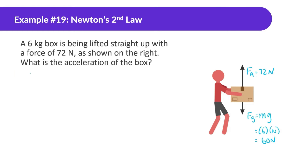We can do the sum of all forces equal to mass times acceleration, and this time we're looking in the vertical direction, or Y. In the Y direction there are two forces: force applied going up, and force of gravity going down — so minus — equals mass of the box times acceleration. Force applied is 72, force of gravity is 60, mass of the box is 6, and we are looking for the acceleration.